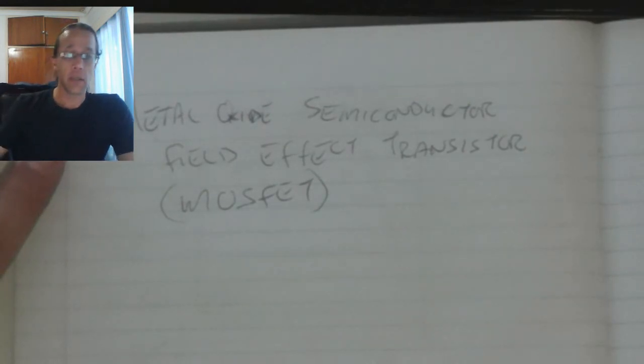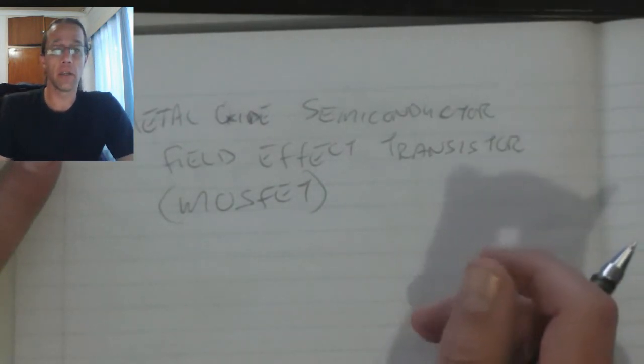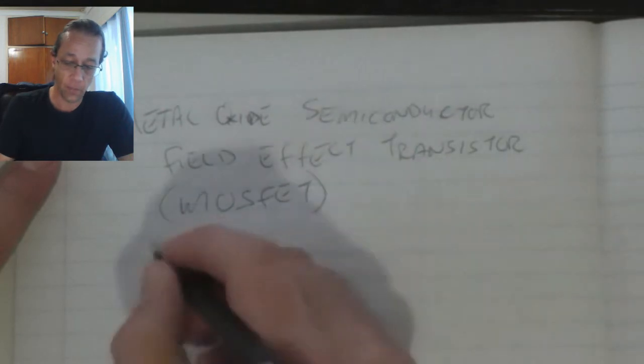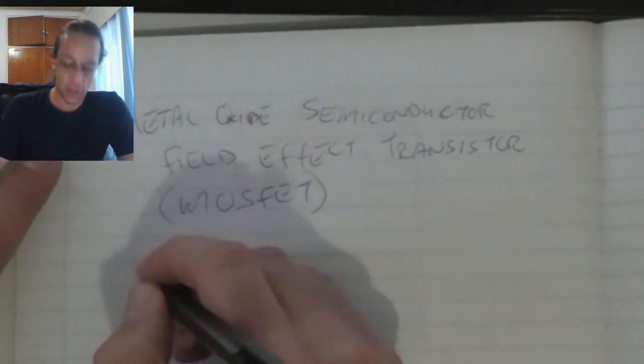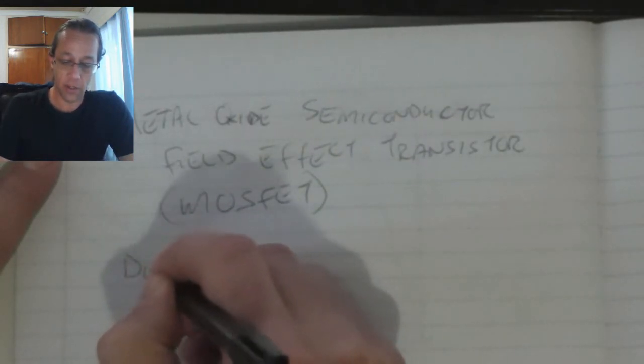Now there are two types that exist. I'm just going to look at the basic construction of both of them. The first one is the depletion MOSFET.